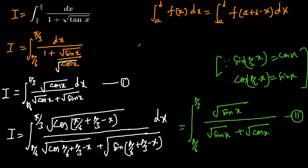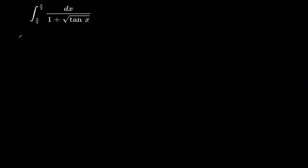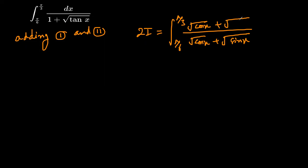Now we add equation 1 and equation 2. I plus I gives 2I. Adding 1 and 2, we get 2I equal to integration from π/6 to π/3 where the denominator is the same — √sin x plus √cos x — and the numerators are √cos x from equation 1 and √sin x from equation 2. The numerator and denominator cancel, giving 2I equal to integration from π/6 to π/3 of 1 dx.